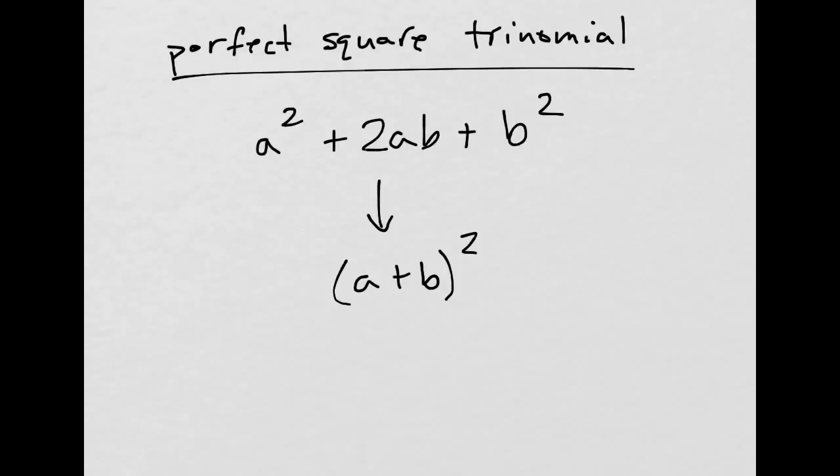Perfect square trinomials have this form. So if it looks exactly like this, then we can rewrite it like this. Our goal is to check to see if it is in this form. So how would you do that?